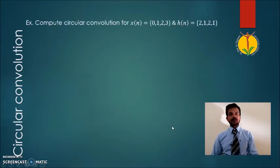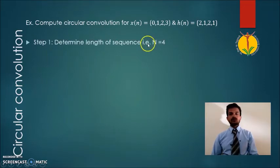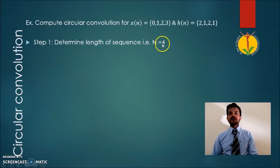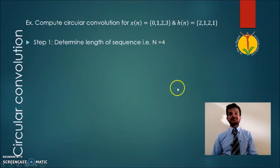Let us take a simple example to compute the circular convolution of x of n having samples 0, 1, 2, 3 and h of n having samples 2, 1, 2, 1. In the first step, we determine the length of the sequence — the total number of samples in x of n is 4, so capital N equals 4. In cases where the two sequences do not have the same length, we append zeros so they become of equal length; this process is known as zero padding.